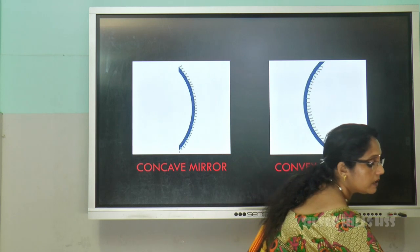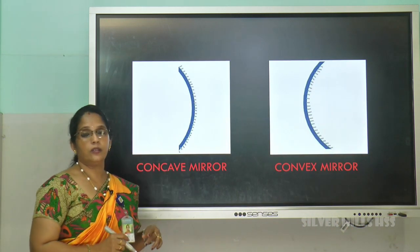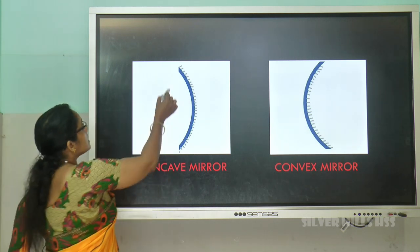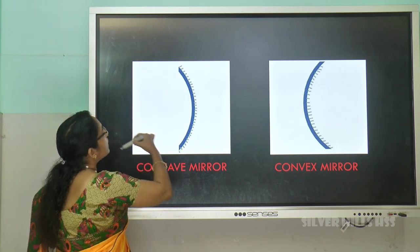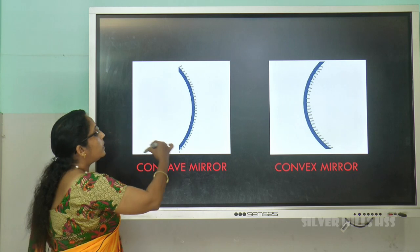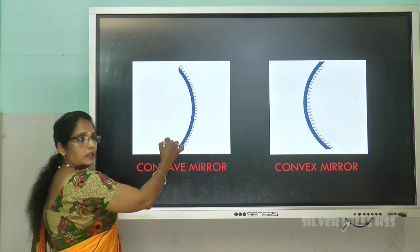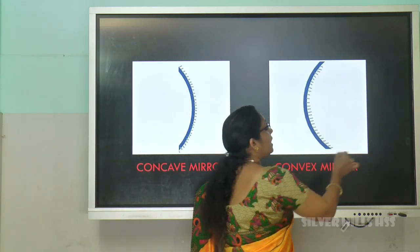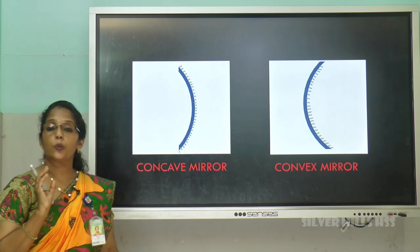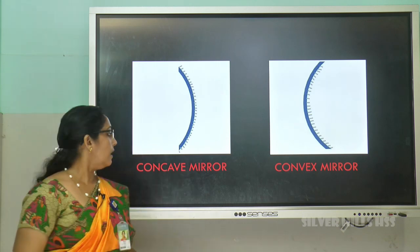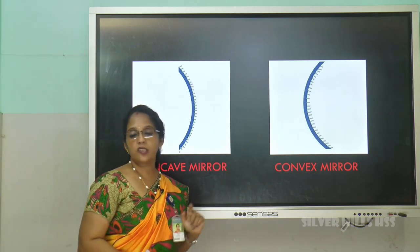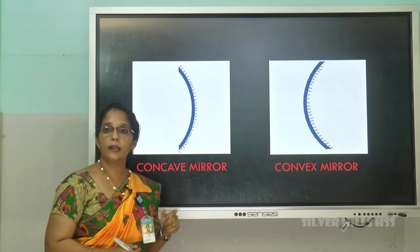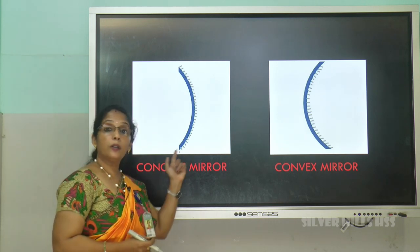These curved mirrors are called spherical mirrors. Why? If you complete the curve of the mirror into a full circle, the mirror is a part of a sphere. Since curved mirrors are part of a sphere, they are called spherical mirrors. So the two spherical mirrors we have studied are concave mirrors and convex mirrors, and both are called spherical because they are part of a sphere.